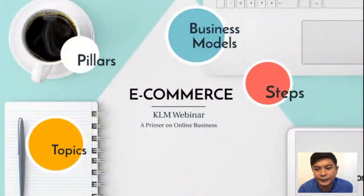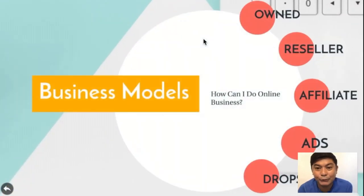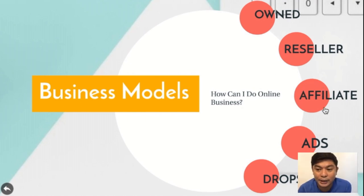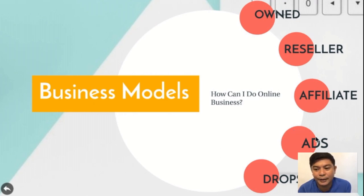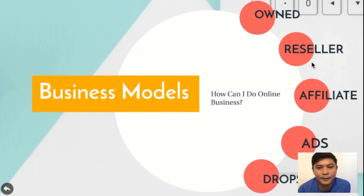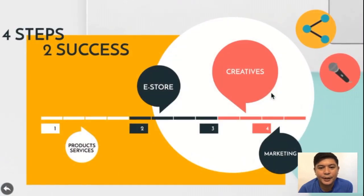Those are the business models — the basic ways to start an online business. From owned products, to reselling, affiliate marketing, advertising via content, and lastly drop shipping. Now let's move to the four simple steps to success — the usual steps I walk clients and newbies through when starting an online business.